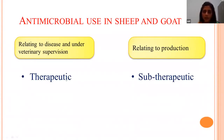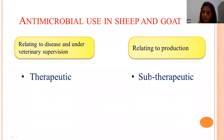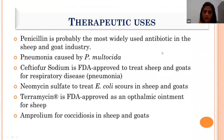Antimicrobials in sheep and goat are used for therapeutic purposes to treat infectious diseases — most commonly clostridial infections, PPR (Peste des Petits Ruminants), blue tongue, and mastitis. They are also used at subtherapeutic doses to increase production and prevent outbreaks. Penicillin is an FDA-approved antibiotic effective against pneumonia caused by Pasteurella multocida. Ceftiofur sodium is used for respiratory infections at 1.1–2.2 mg/kg body weight intramuscularly.